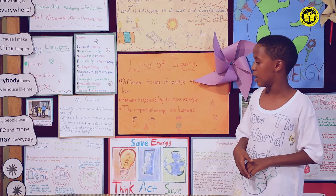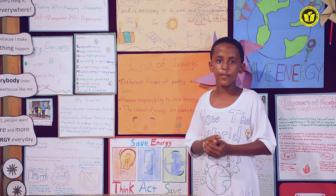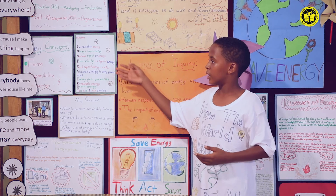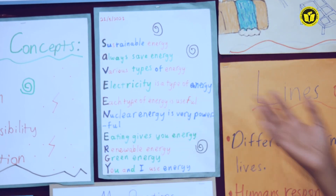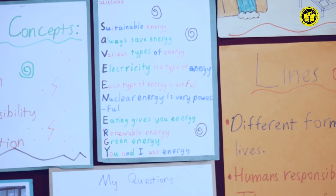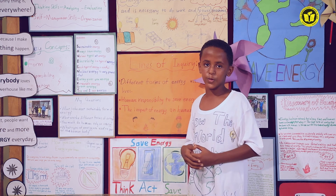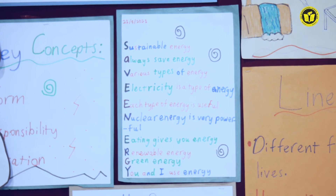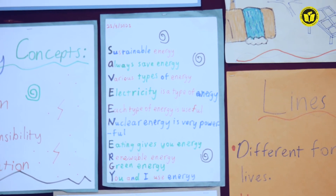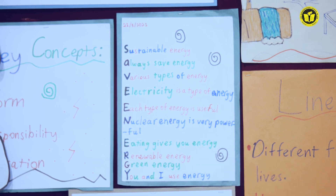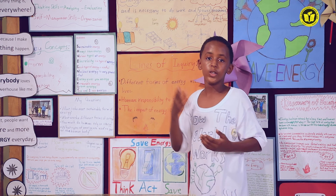Before I end my presentation, I'd like to share with you my acrostic poem on save energy. Sustainable energy. Always save energy. Various types of energy. Electricity is a type of energy. Each type of energy is useful. Nuclear energy is very powerful. Eating gives you energy. Renewable energy. Green energy. And you and I use energy.